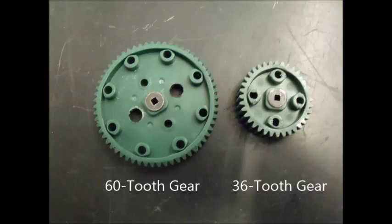For the second part of this transmission you will need a 60 tooth gear and a 36 tooth gear. This is the part of the transmission that can be switched by a piston from high torque to high speed mode.